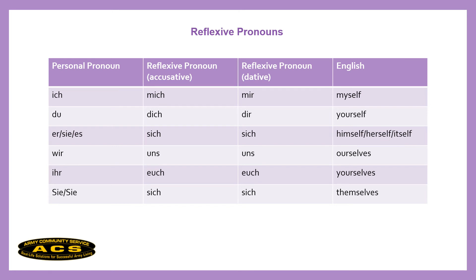Reflexive pronouns can either refer back to the subject, or they can also refer to each other — for example, between people. I could say in German 'Wir treffen uns,' meaning 'we meet' or 'we meet each other.' I wouldn't really say 'we meet ourselves' in English. That's one thing to mention: you cannot always literally translate things from one language into the other. Oftentimes in German you use reflexive pronouns, but you wouldn't say it that way in English.